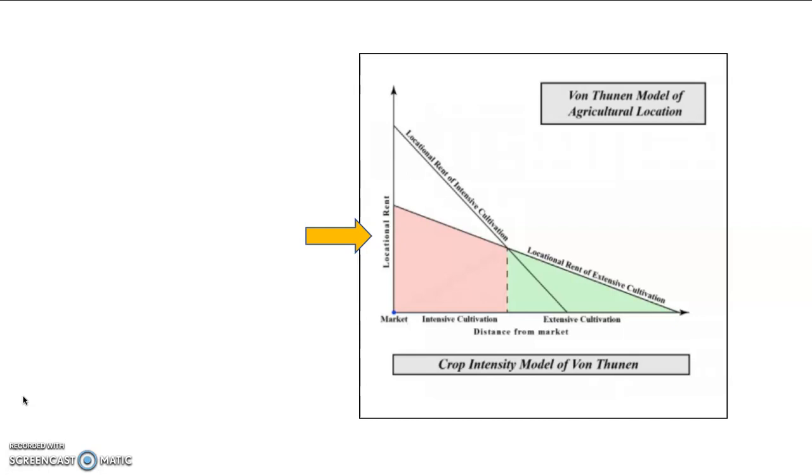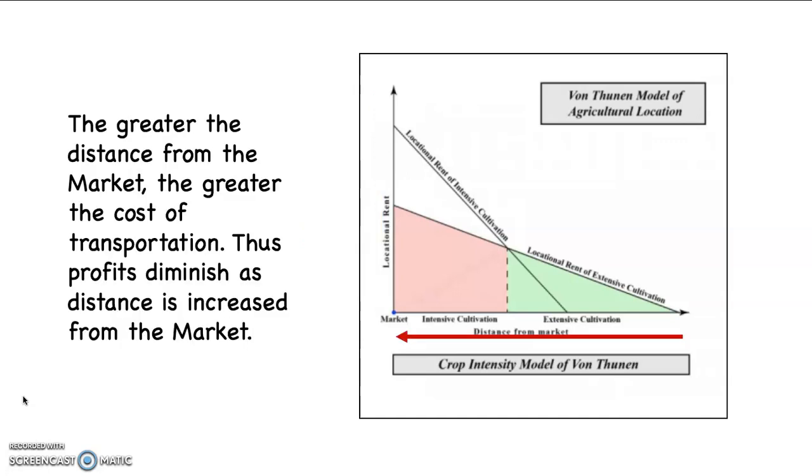Then notice the line that goes straight up on this graph away from the market is locational rent, which basically means the profit. How much money the farmer can get for the products. So as you go up on the graph, the farmer's able to get a bigger profit.